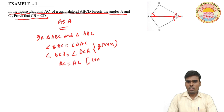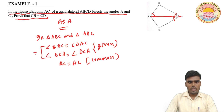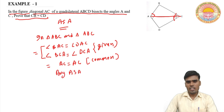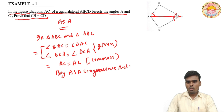And AC is equal to AC — ये common है। According to the definition of ASA congruence rule, two angles equal मिल गए और उनके बीच का included side भी equal मिल गया। इस प्रकार, by ASA congruence rule, triangle ABC is congruent to triangle ADC.